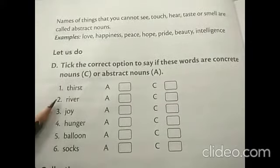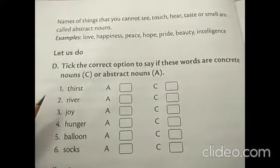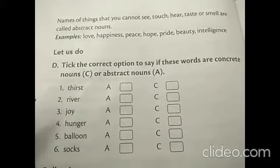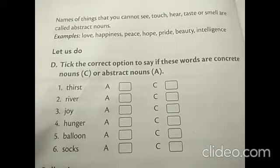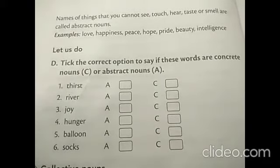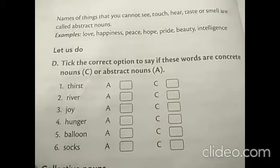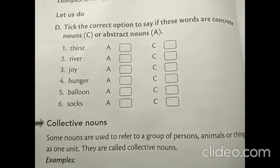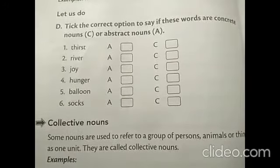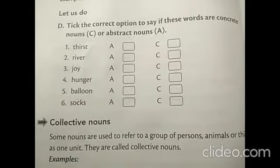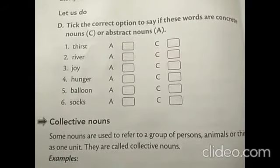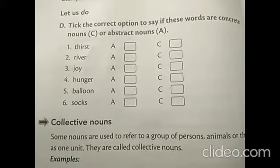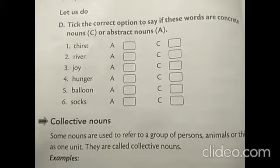For example, river. As I told you already in the last lesson about countable and non-countable, river comes under concrete noun. Because you can touch the water of the river, and you can see the river. Yes, it comes under concrete noun.